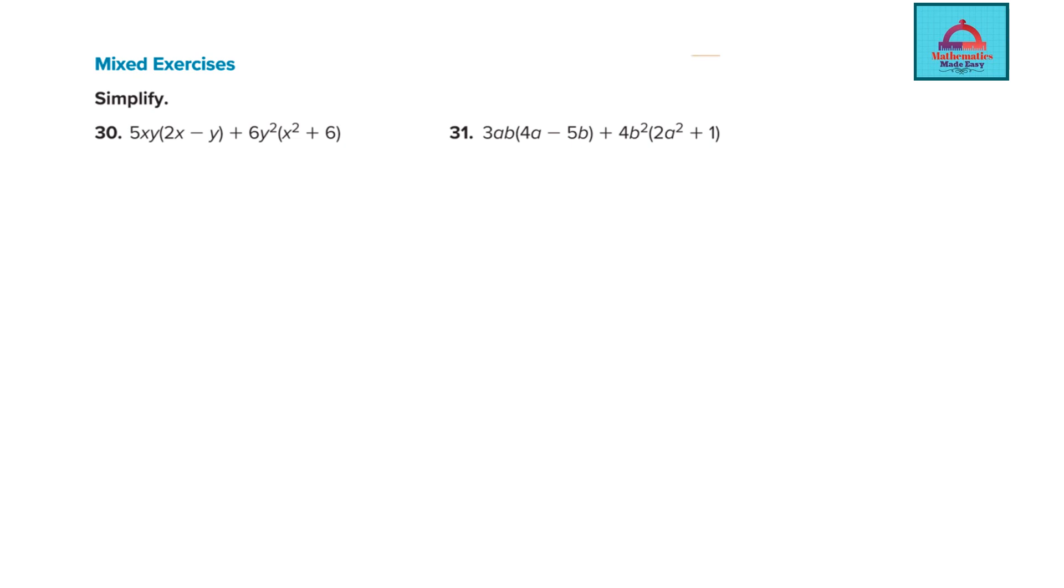Let's see what are the mixed exercises and mixed operations on polynomials happening. So look here you have brackets so when you have brackets it means you are multiplying. Here you are multiplying a monomial 5xy with a binomial 2x minus y. Similarly you are multiplying 6y² with the bracket term x² plus 6 and in between you are also doing addition. So this is a mixed exercise problem. You are doing addition, you are doing multiplication and similarly we will see more problems where you do addition. In this one also you see brackets so you know you are going to multiply.